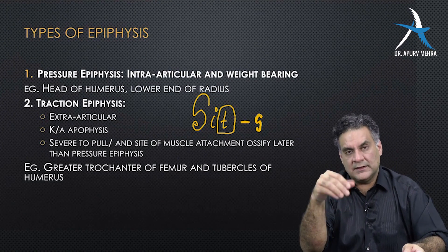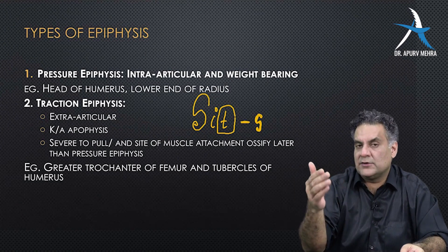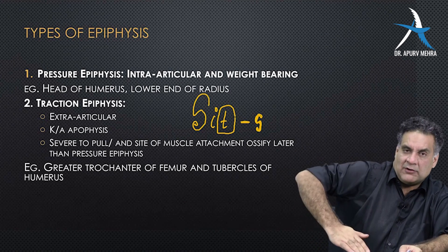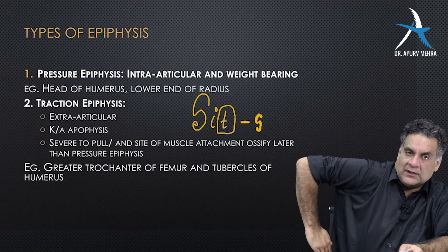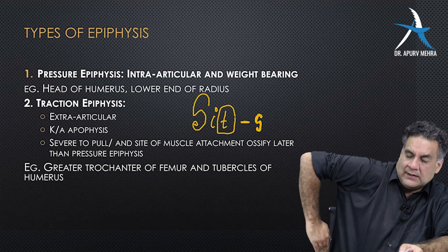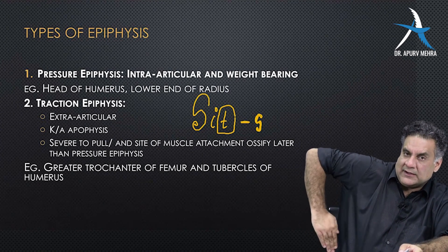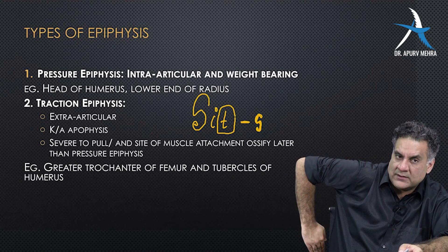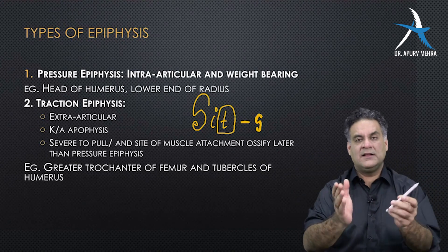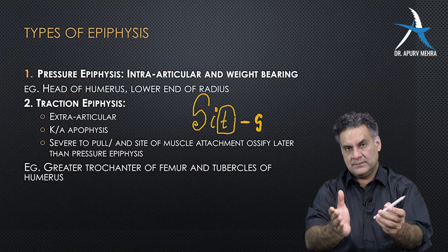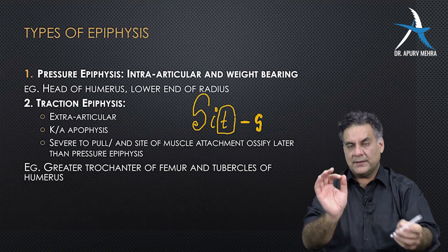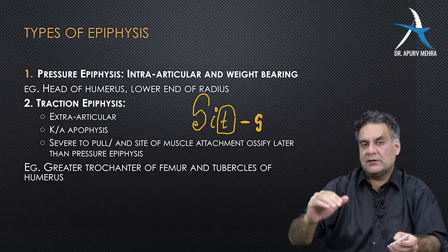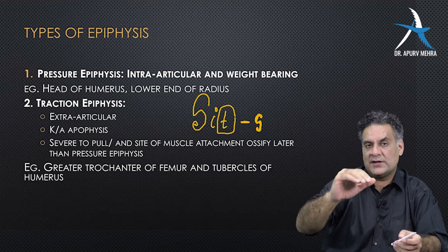The other three muscles are external rotators. If you place the back of your hand over the lower back and try to lift it up, this is the extreme of internal rotation, called the lift-off test for subscapularis. The other three muscles are for external rotation.